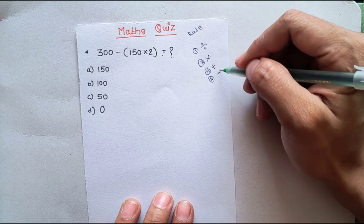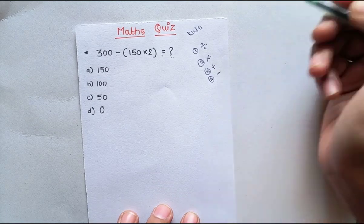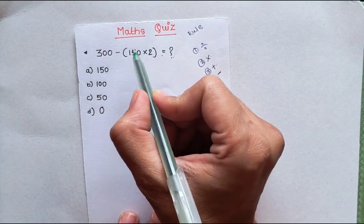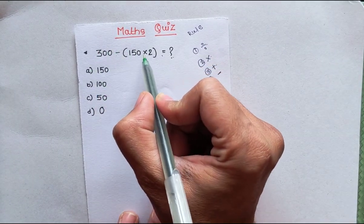So according to this rule, in our equation we will do first the multiplication.